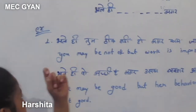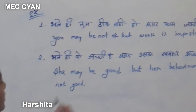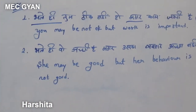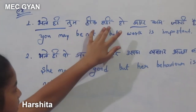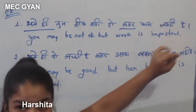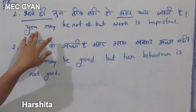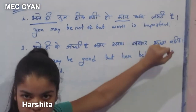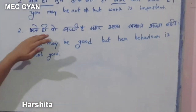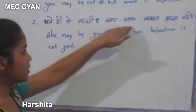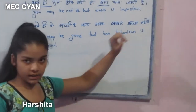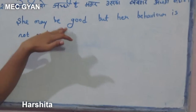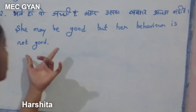Bhale hi bagar. In this sentence: 'Bhale hi tum thik nahi ho, nogar kams evadi.' You may not be ok, but work is important. Another example: 'Bhale hi ho achchi hai, magar uska brava achcha nahi hai.' She may be good, but her behavior is not good.